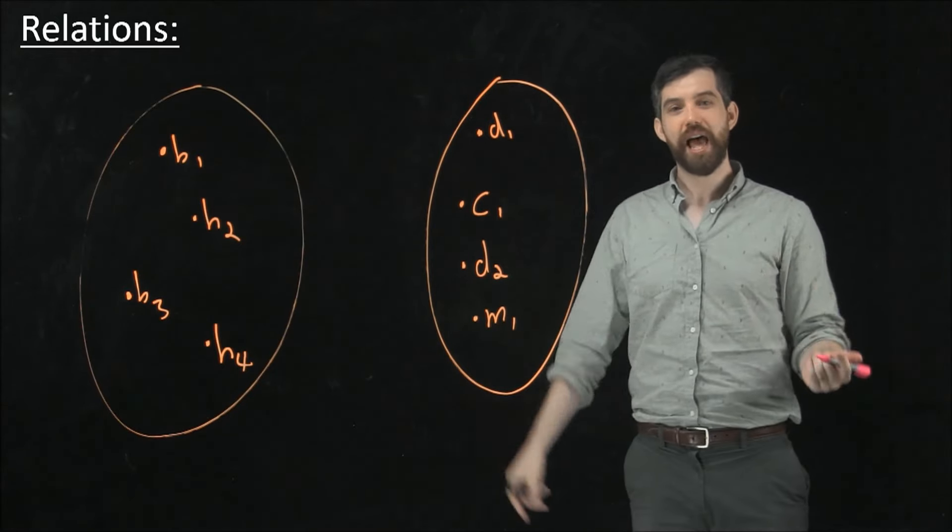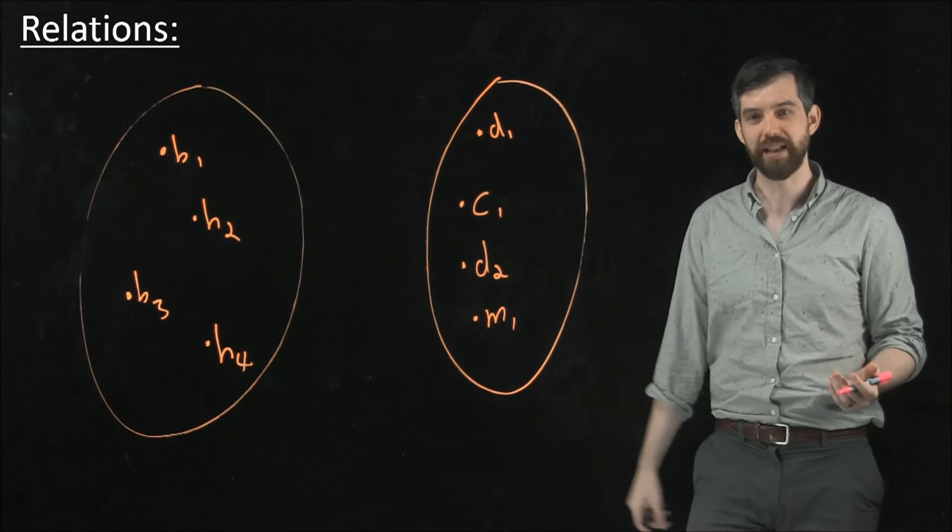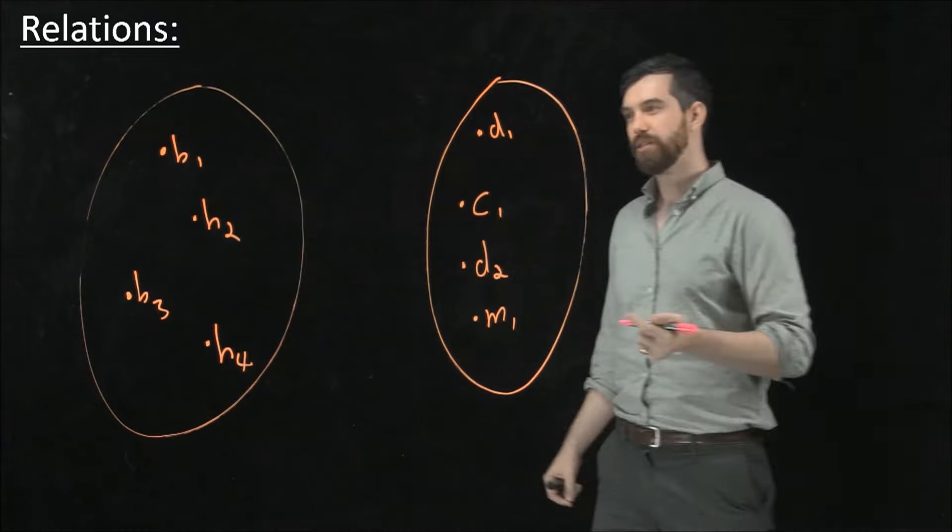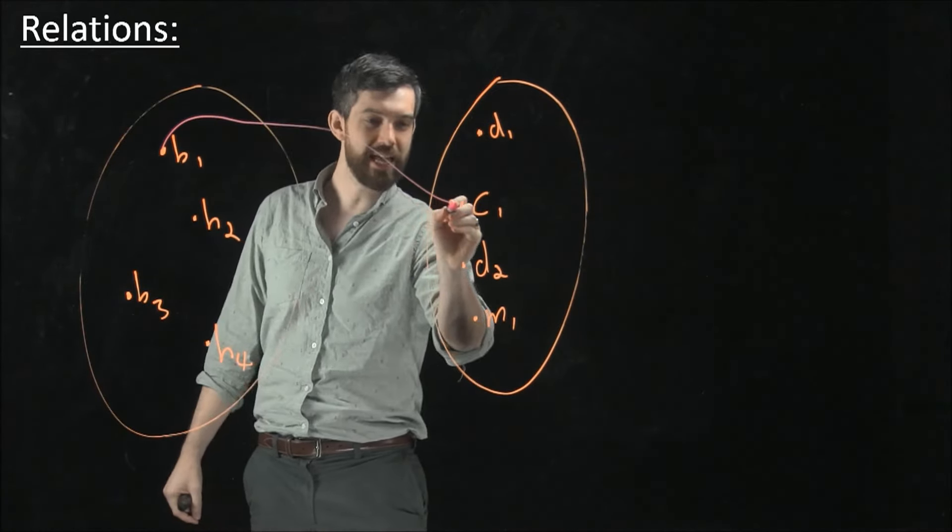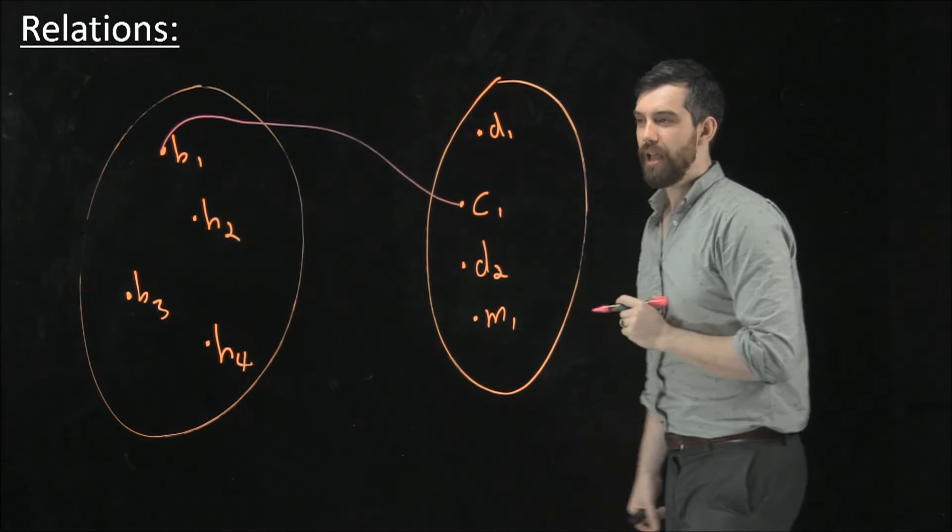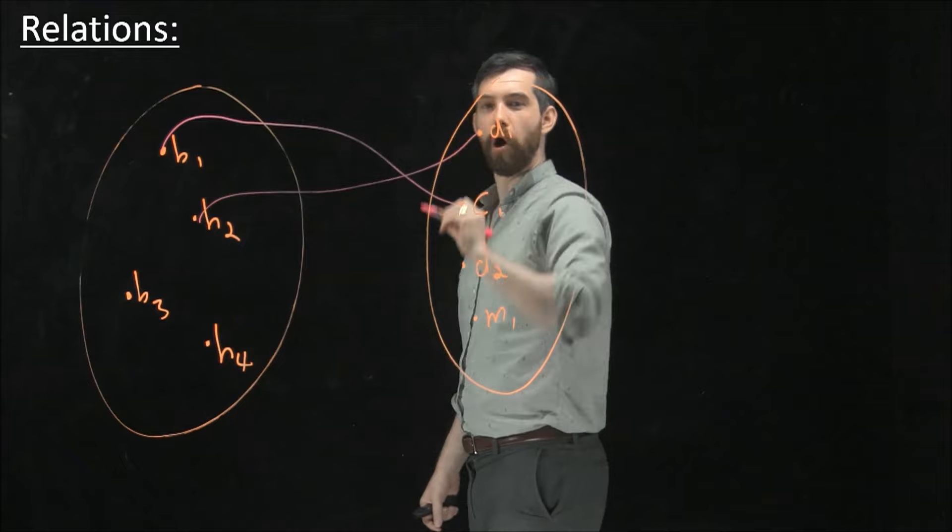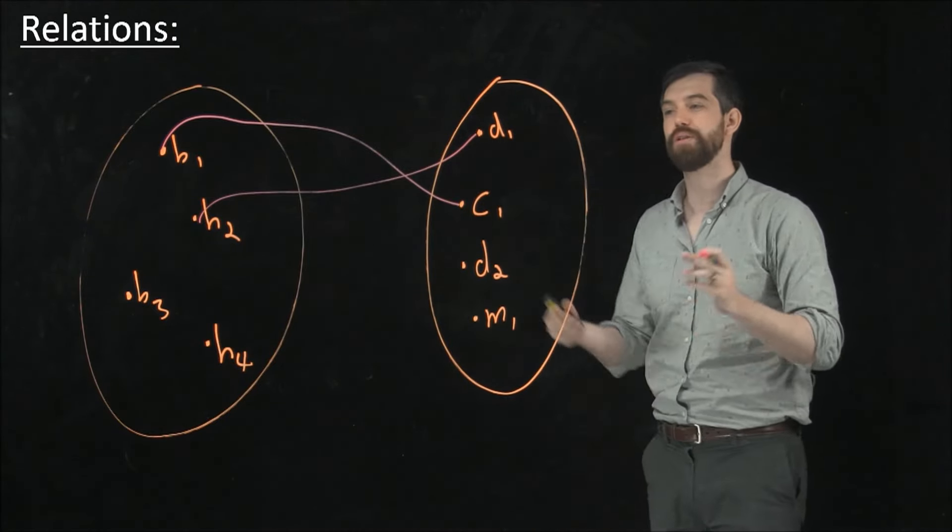So one way that I can depict the relationship that a human owns a pet is by drawing an arrow that connects these elements. So perhaps the first human owns, say, the cat. All right. And perhaps the second human owns this dog over here. So I'm telling you how is there this relationship, how does this work?